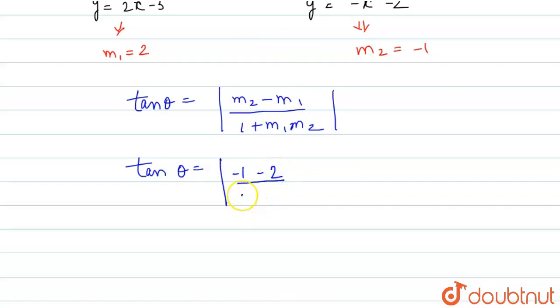So this will be 1 plus m1, which is 2, and m2, which is minus 1.